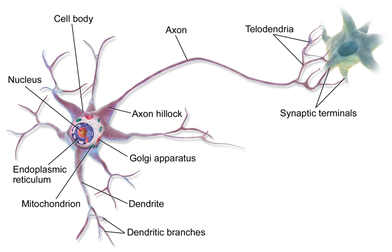In a diverging circuit, one neuron synapses with a number of postsynaptic cells. Each of these may synapse with many more, making it possible for one neuron to stimulate up to thousands of cells. This is exemplified in the way that thousands of muscle fibers can be stimulated from the initial input from a single motor neuron. In a converging circuit, inputs from many sources are converged into one output, affecting just one neuron or a neuron pool.